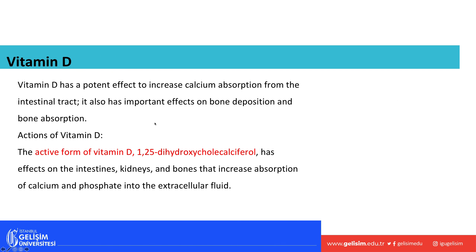Vitamin D has many functions. It increases calcium absorption from the GI tract and has important effects on bone deposition and absorption. The active form is 1,25-dihydroxycalciferol, which acts on the gut, kidneys, and bones to increase absorption of calcium and phosphate into extracellular fluid.